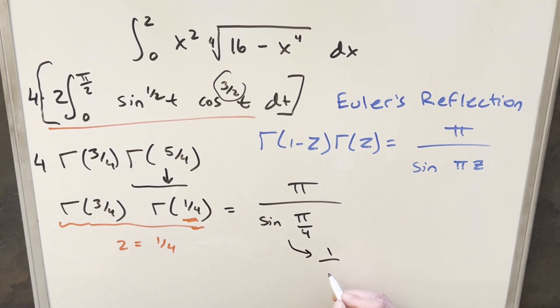But sine pi over 4, that's 1 over square root of 2. And so for my final solution of this, I can write this as square root of 2 times pi.